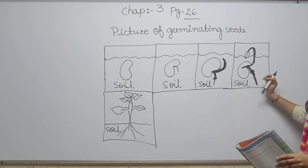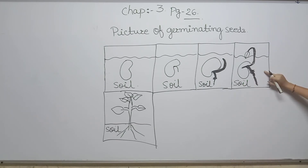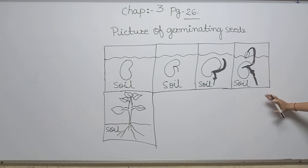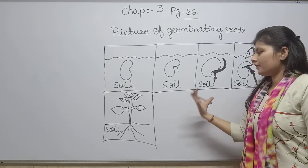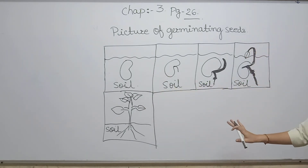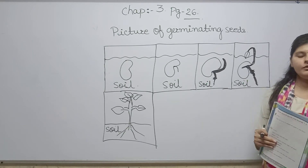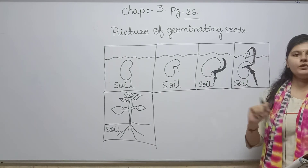In the next stage, leaves start growing and you can see small leaves coming out above the ground. In the last picture, you can see that it is a fully grown plant. So these are the steps of seed germination. You have to draw it in your textbook and put colors in it — that is the homework.